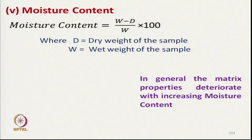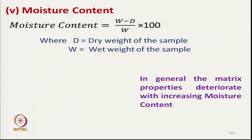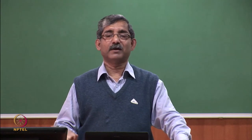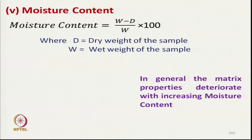The next important characteristic is moisture content — the percentage of moisture present in the material. It can be measured using an oven drying technique: the dry weight of the sample is taken, and compared to the weight of the sample with water to calculate moisture content. In general, matrix properties deteriorate with an increase in moisture content, so we must select matrix material with lower moisture content.